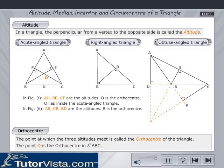In a right angled triangle, the two perpendicular sides themselves form two of the altitudes. Hence, in figure 2, AB, BC and BD are the altitudes. The altitudes intersect at B. Hence, B is the orthocentre.